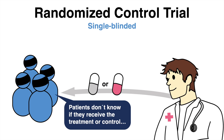In single-blinded studies, only the study participants are blinded, meaning that they do not know whether they have received the placebo or the investigational treatment. This eliminates bias that could originate from the patient's expectations. For example, a patient who knows that they have received the treatment might be more likely to report side effects because they expect to experience side effects as the result of the treatment.